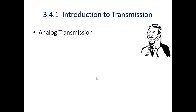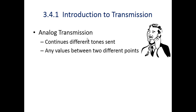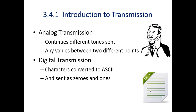Introduction to transmission: analog transmission is what we use in our day-to-day life — it is in continuous form and can take any value between two different points. Digital transmission means the computer files available in our computer are in the form of digital data, and if they are transmitted using a digital signal, it is referred to as digital transmission. The files stored in our computer are in the form of characters or words.